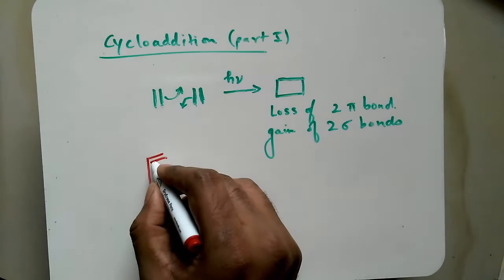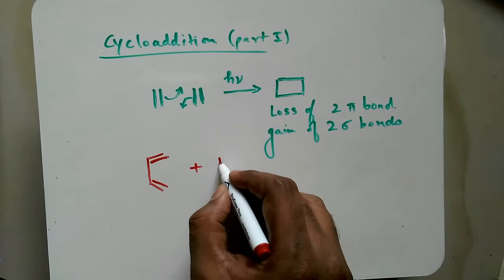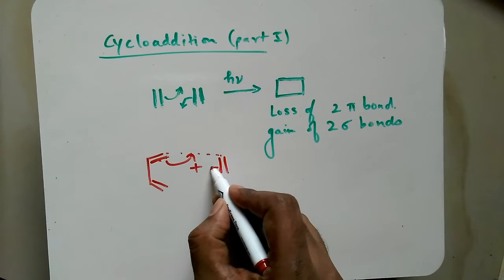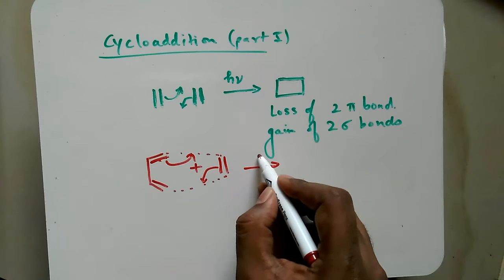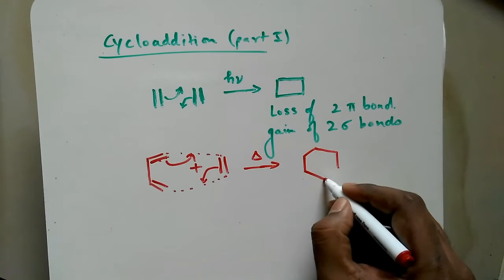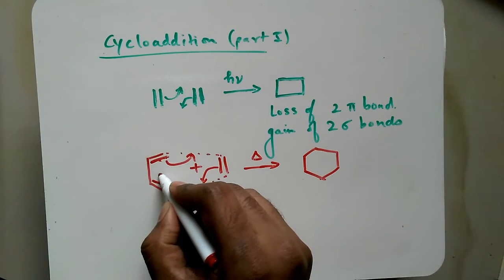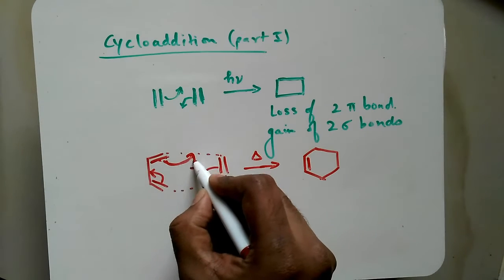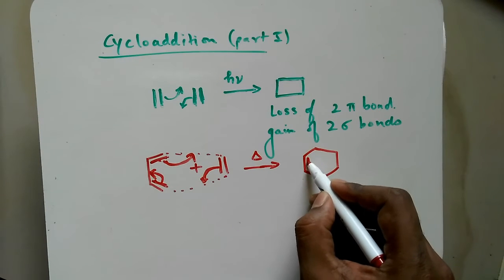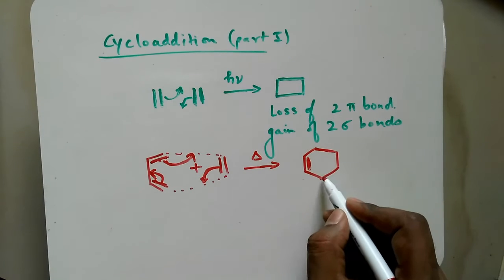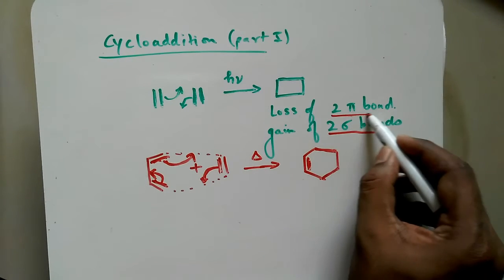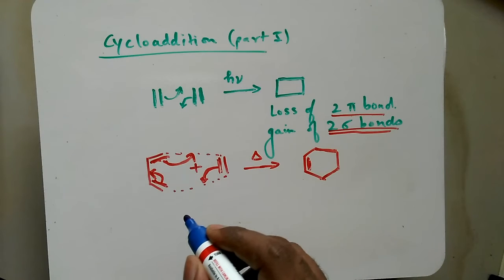When we consider 1,3-butadiene plus one ethene molecule: this double bond falls here forming a bond here, and this double bond falls here forming a bond here. This leads to the formation of the product — which can be under thermal or photochemical condition. Here this double bond falls forming a bond, and this double bond falls forming a bond. Again there is formation of two sigma bonds and loss of two pi bonds.